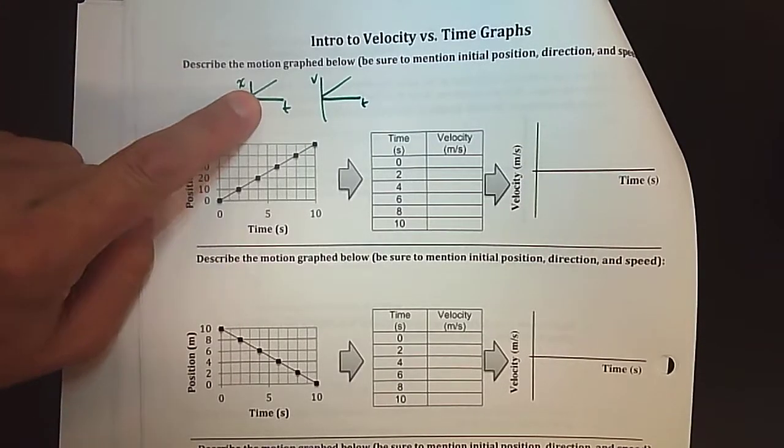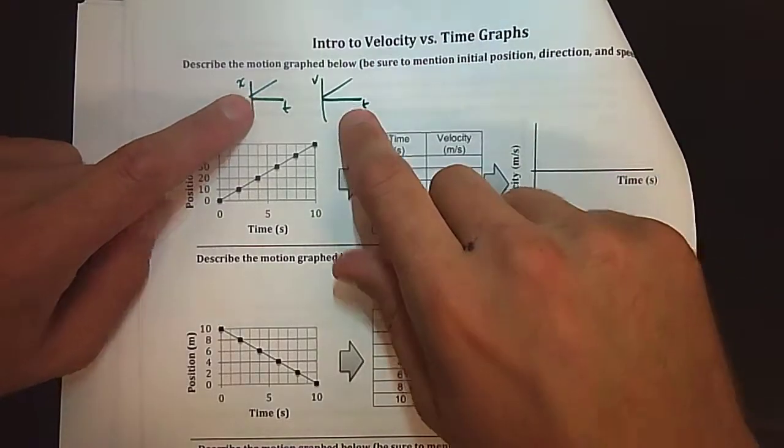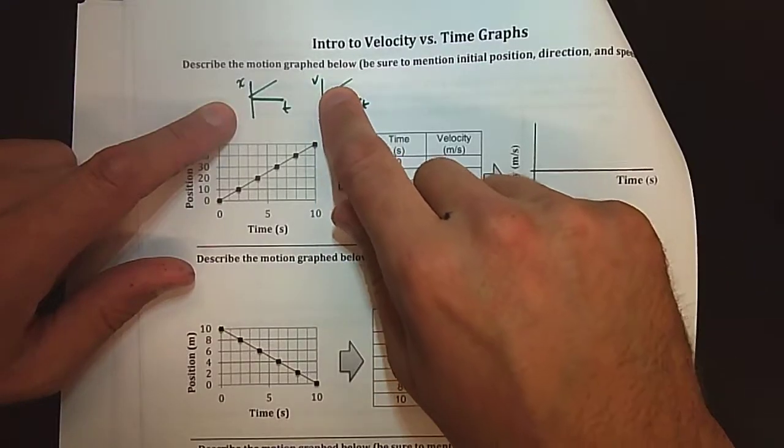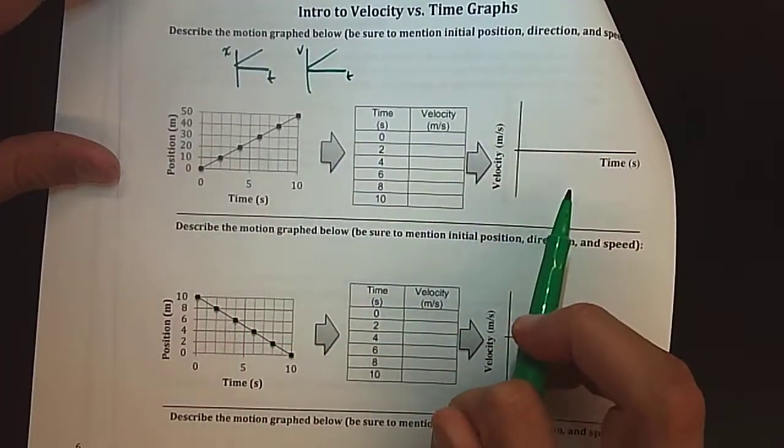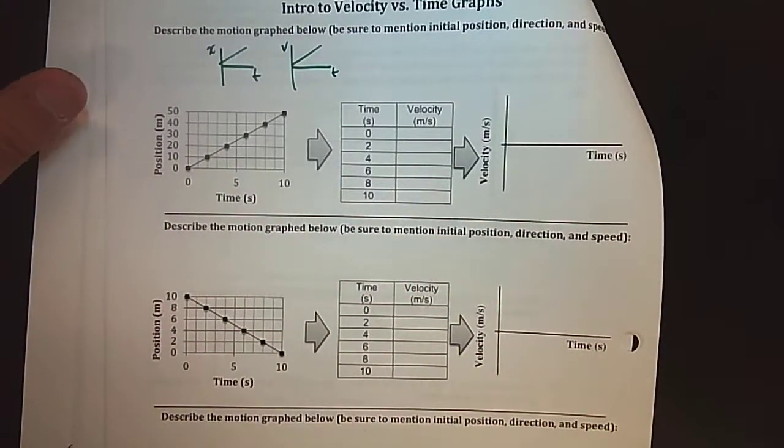So it's really important to not just guess on the motion based on the shape but to really understand why an object is moving the way it is based on how the graph is laid. Let's create a velocity versus time graph from a position versus time graph.